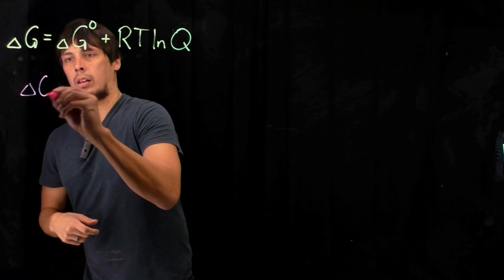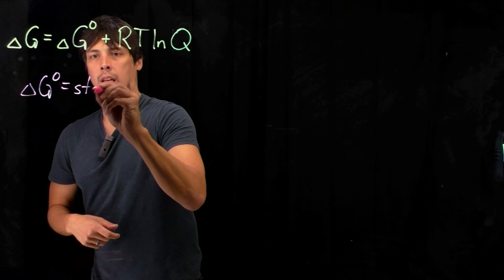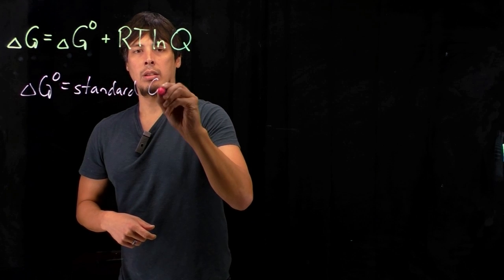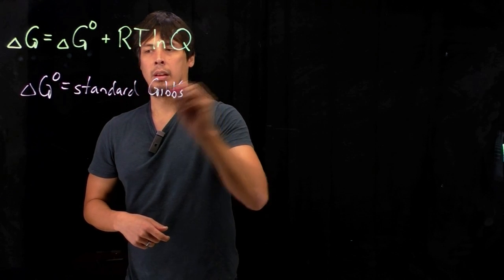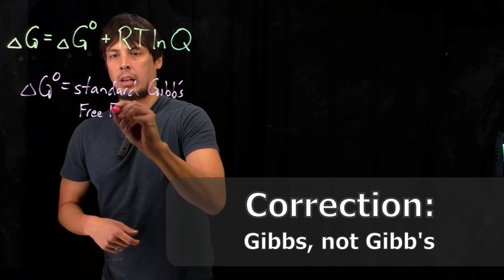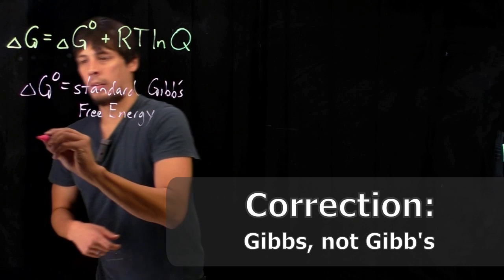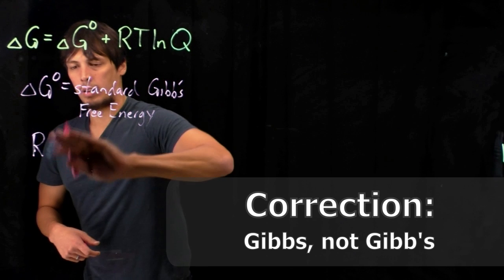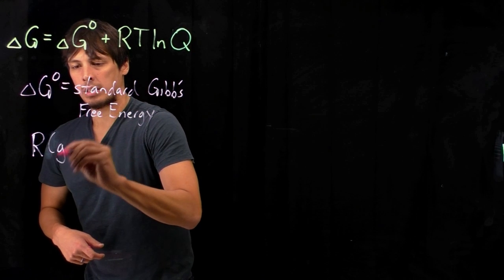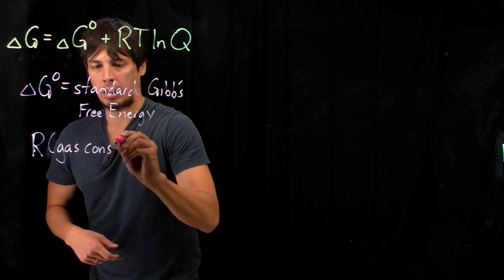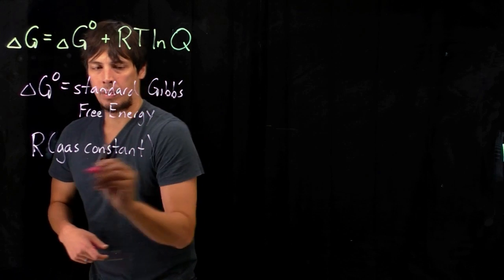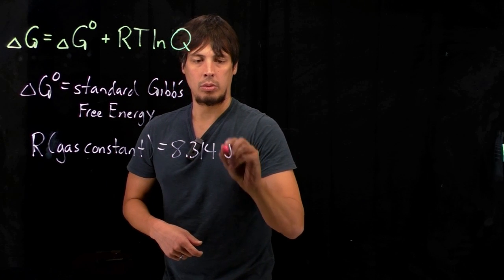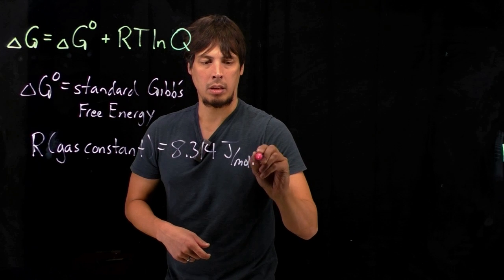As I just said, delta G knot is the standard Gibbs free energy. You have probably seen R before, which is otherwise known as the gas constant, and is equal to 8.314 joules per mole Kelvin.